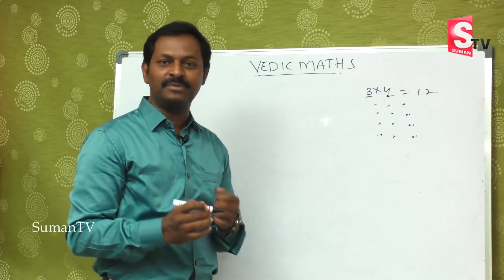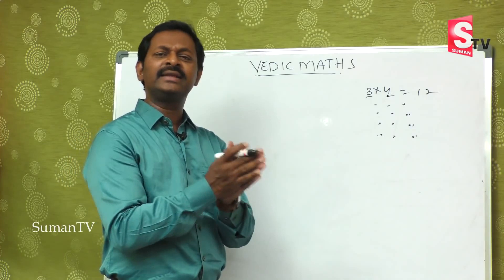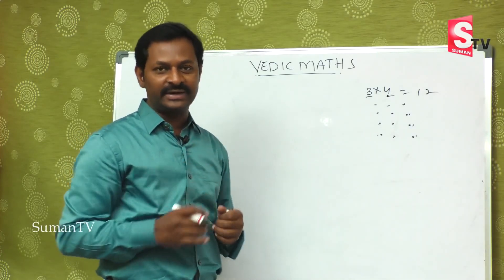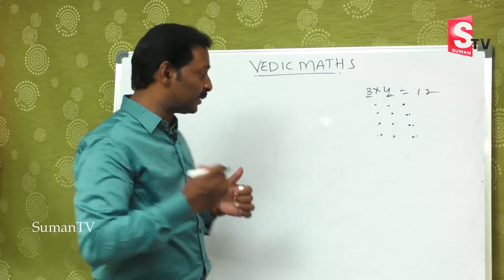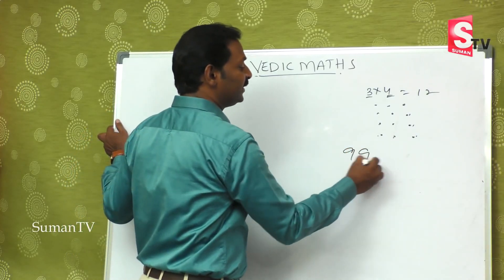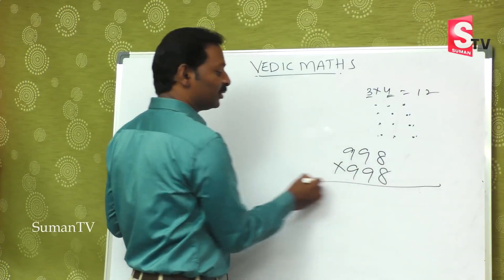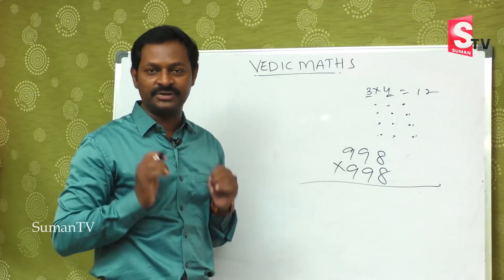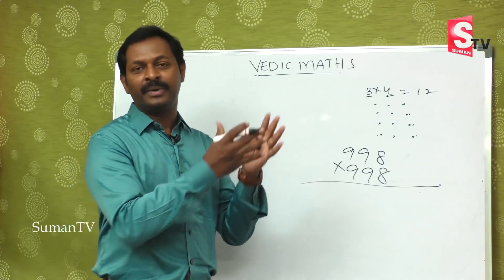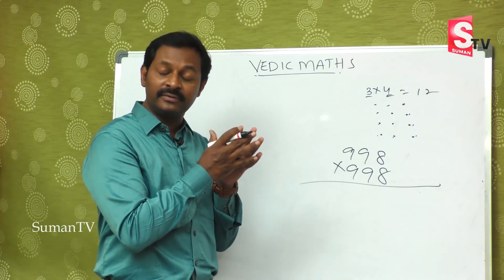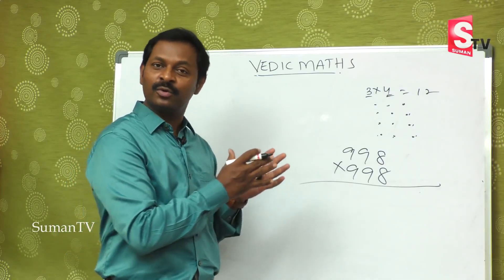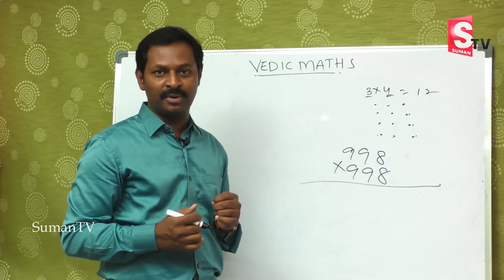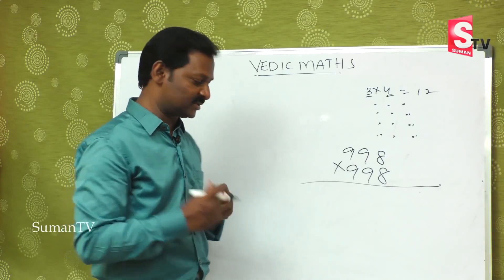Now we need to know at least 9 tables for calculating like this. But there are bigger numbers — suppose 998 multiplied by 998. Is it possible using tables? No, this is not at all possible. So our Vedic period gave us some methods below, and today we will discuss about these things in our classroom.